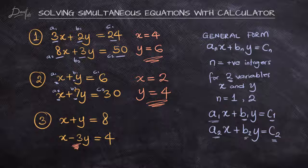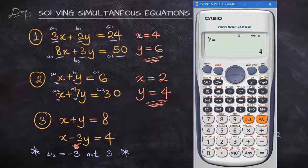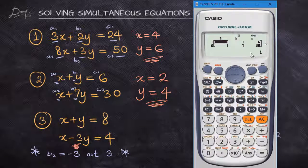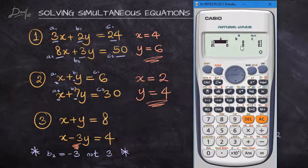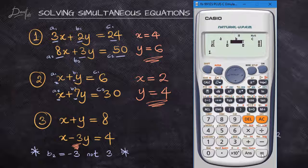Now this third equation, what you need to note is that our b₂ is not 3. Looking at the question, b₂ is minus 3, not 3. So that's what we need to input into our calculator when we're working. Let's clear our values and return them to 0. Now we can see our a₁ is 1, our b₁ is 1, our c₁ is 8, and then our a₂ is 1, our b₂ is minus 3, not 3, and then our c₂ is 4.